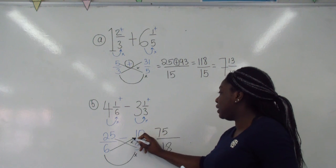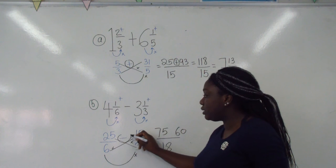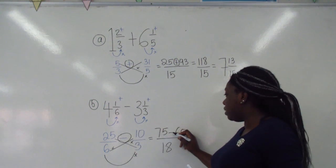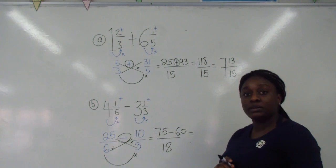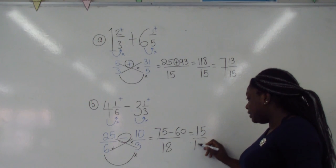The 6 and the 10 to kiss, which gives us 60. Remember the sign in the middle is a minus, so we stick a minus in the middle. 75 take away 60 is 15 out of 18.